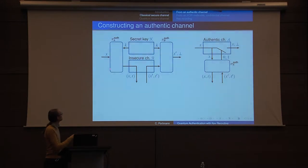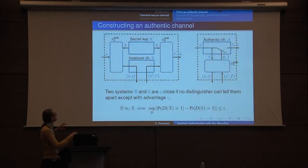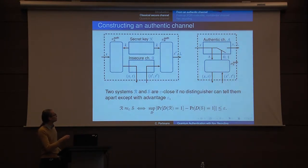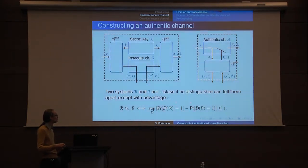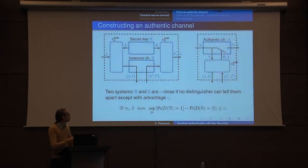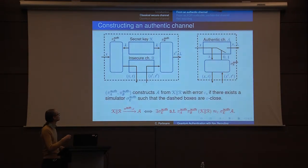To argue security, we want to say the system we've constructed is indistinguishable from the idealized one. Indistinguishable means you put a box around it — it takes an input here and produces an output — and we give one of the two boxes to a distinguisher who has to guess which one it's holding. We look at the difference in the probability of outputting 1 when interacting with the first versus second system. That's the advantage of the distinguisher. If no distinguisher can guess with advantage more than ε, the two systems are ε-close.